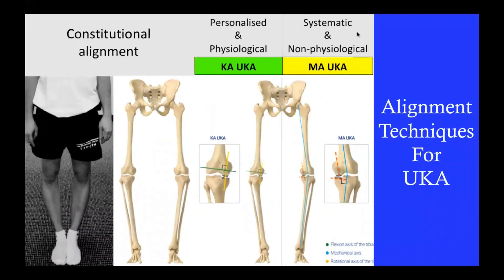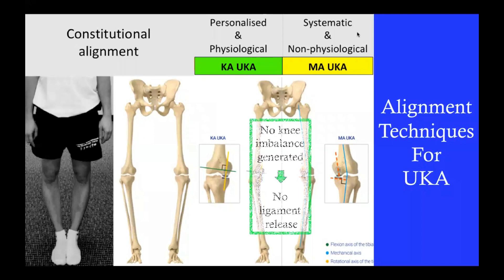Regarding the unicompartmental knee implant, it follows the same principles. For the uni, there are two main techniques: KA and MA. For the mechanically aligned uni, the goal is to perform the cut perpendicular to the long bone axis. For the KA uni, the goal is to perform the bone cut parallel to the joint axis. Both techniques try to preserve the constitutional limb anatomy and neither creates knee imbalance, so there is no need for soft tissue release.